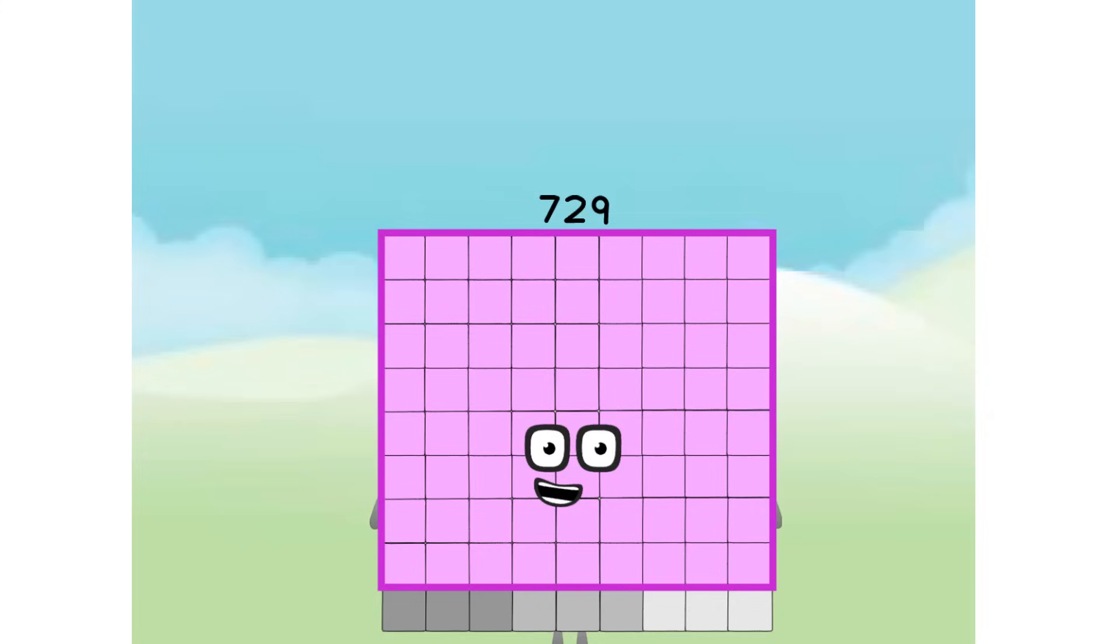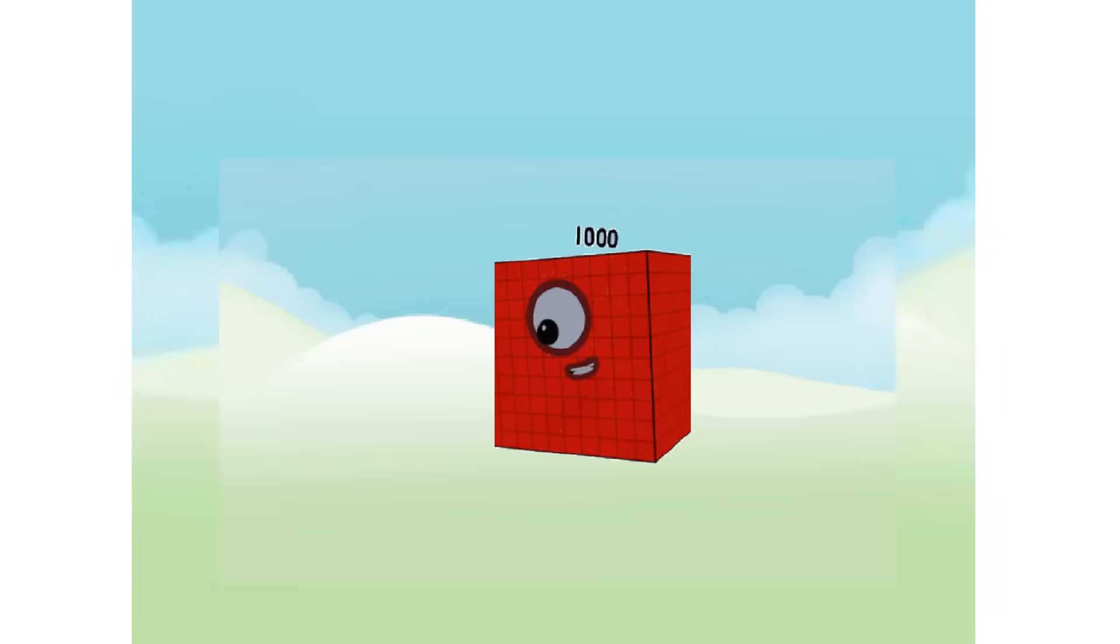If 81 is gonna be a super square, I am gonna be a super cube. I am a cube 10 square. A cube and a super rectangle and a square. I am 1,000 ones. 1,000.